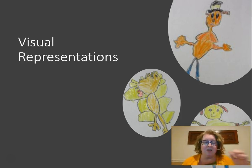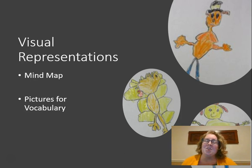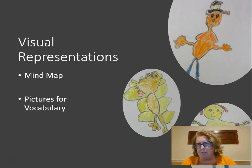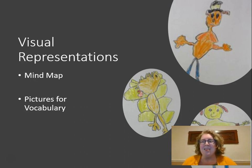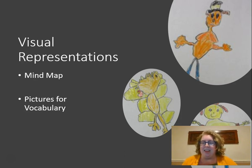Another way to do formative assessments is through visual representations — asking students to draw what they know or draw a definition. A mind map is similar to a concept map except students also draw pictures in addition to words. I really like to use visual representations for vocabulary words — rather than copying a definition from the textbook, students draw a picture of a construct. That really stretches their brains to think about what a word means and put it in a different context.